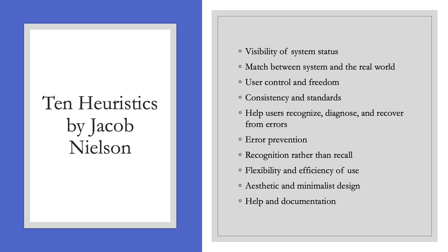The ten heuristics you'll likely be using are Jacob Nielsen's ten heuristics. They're covered thoroughly in the textbook, but they are: visibility of system status, match between system and the real world, user control and freedom, consistency and standards, help users recognize, diagnose and recover from errors, error prevention, recognition rather than recall, flexibility and efficiency of use, aesthetic and minimalist design, and help and documentation.